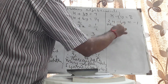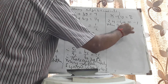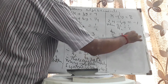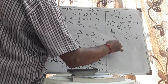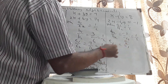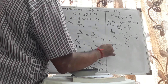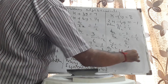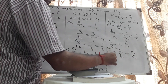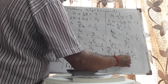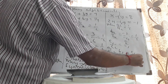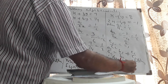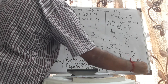Case 3: x minus 2y equals 8 and 2x minus 4y equals minus 1. Here A1/A2 equals 1/2, B1/B2 equals (minus 2)/(minus 4) which equals 1/2, and C1/C2 equals 8/(minus 1). Therefore A1/A2 equals B1/B2 but is not equal to C1/C2, so there is no solution and the system is inconsistent.